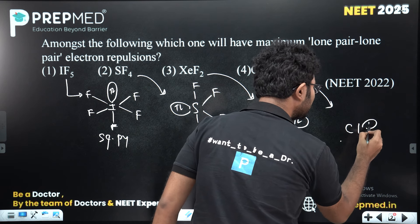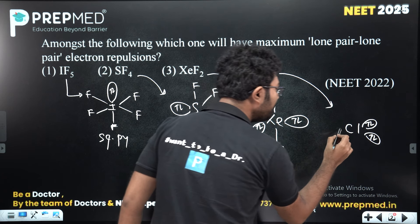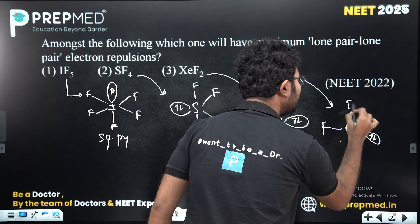That is equatorially two lone pairs. It is a trigonal bipyramidal structure. It is T-shaped.